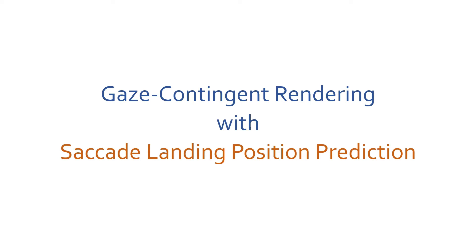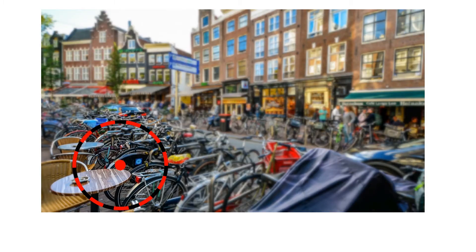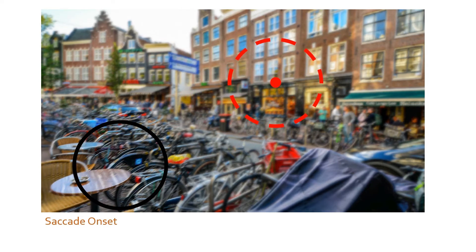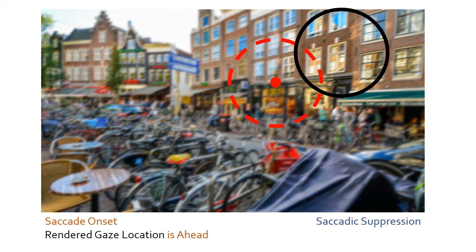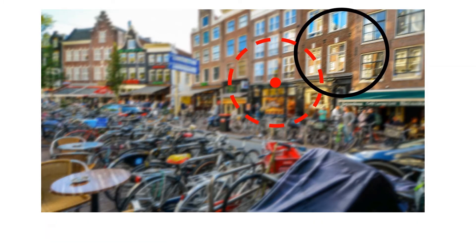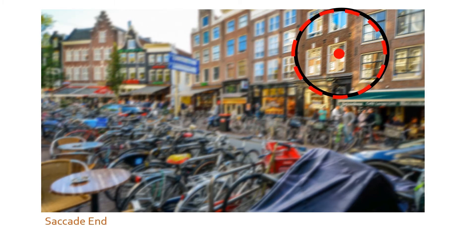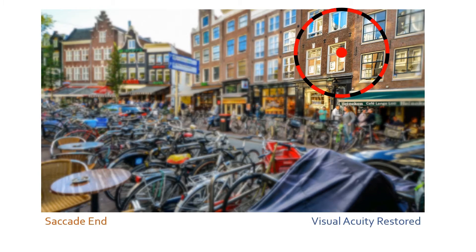In this work we propose to use a prediction of saccade landing position to overcome system latency. When a saccade starts, our system provides a prediction of the landing position and updates the gaze-contingent rendering according to this location. Thanks to this strategy, when the saccade ends and saccadic suppression deactivates, the user can perceive a correct image.